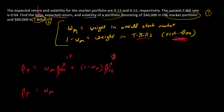That makes the problem really simple. The portfolio beta is just the weight in the overall market portfolio, which is 0.4.